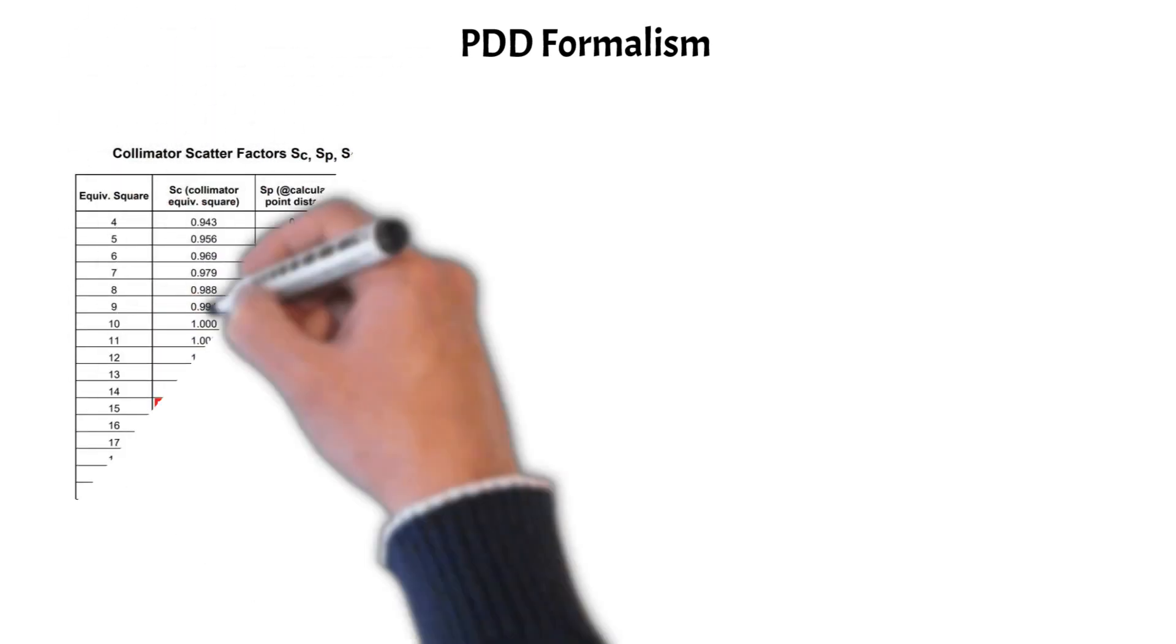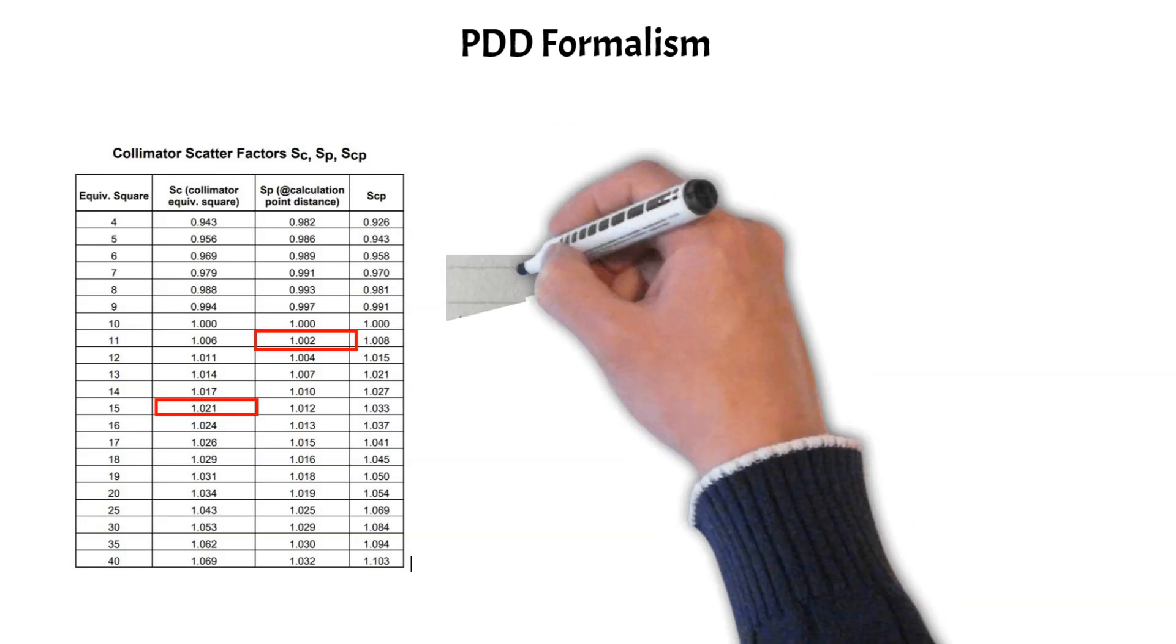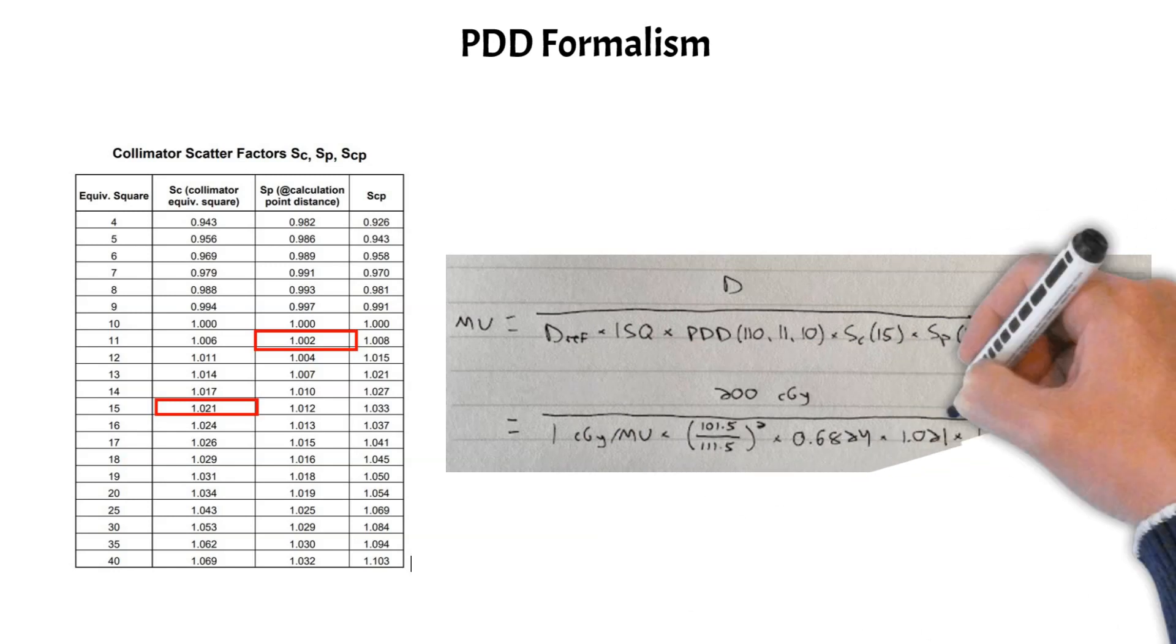Now that we have the correct PDD value, we can move on and get our scatter factors. So using the appropriate collimator and blocked field sizes, we get the scatter factors that are highlighted here. And then we can write everything down in equation form, which is what you are going to see here on the right. I just insert all the correct values in that top line, and then I plug everything in down in the bottom line. And when you multiply everything out, you get an MU setting of 346.